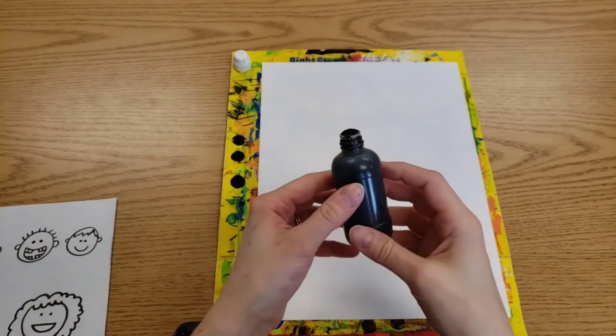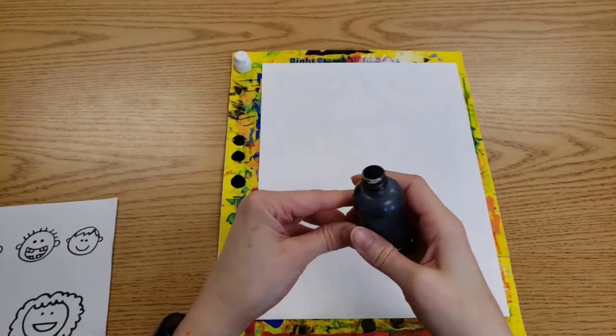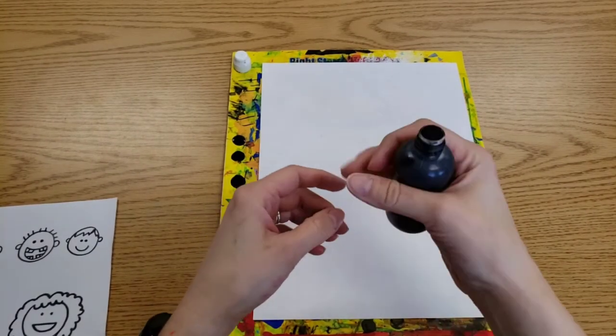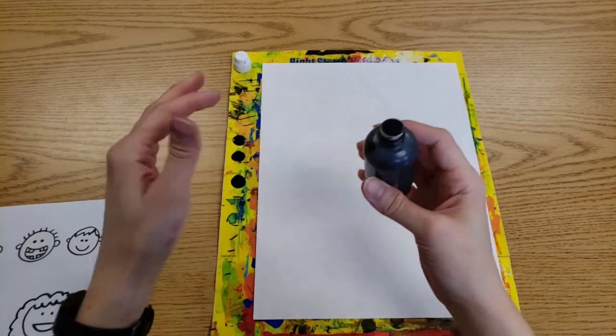Please remember with these bottles, there's one really big rule: never ever squeeze them. You just gently press down and color will come out. If it doesn't come out right away, tap it a little bit more.